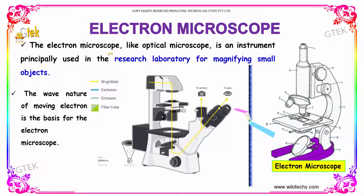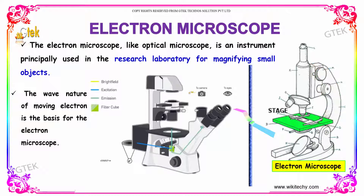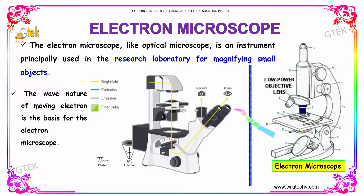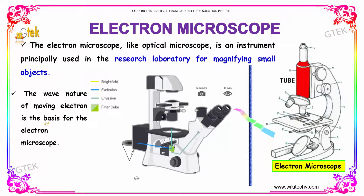The electron microscope is like an optical microscope. It is an instrument principally used in the research laboratory for magnifying very small objects. Here is the electron microscope. The wave nature of moving electrons is the base for the electron microscope.